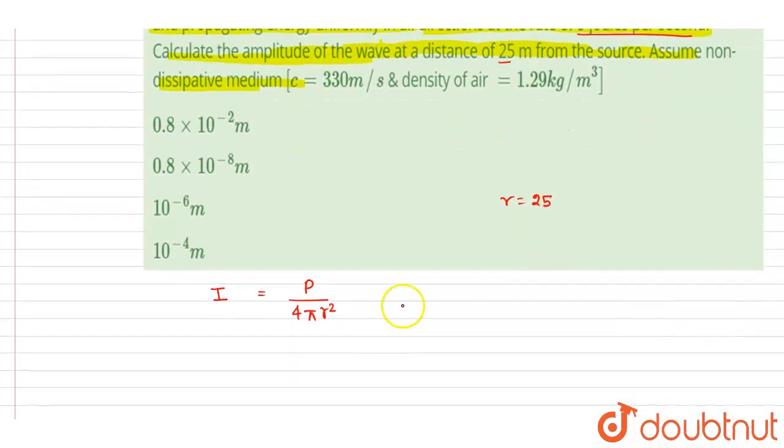So if you see, we know the intensity is equal to 2π² ρv A² f², where A is amplitude and f is frequency.